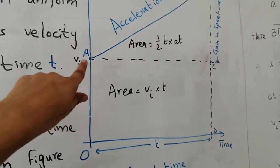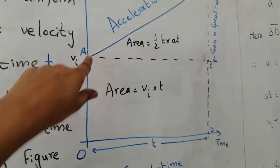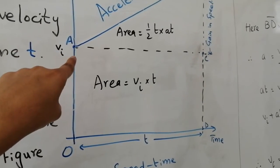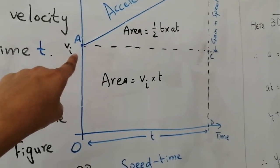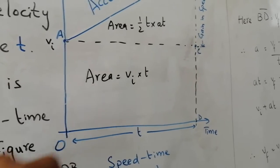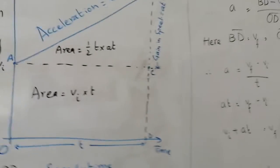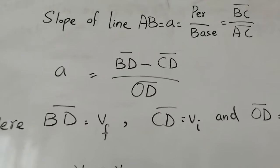When we need the CD value, we can see that the velocity at the starting point was the initial velocity. It means from this point to this point, CD value is vi. So here BD value is vf and CD value is vi, and OD is time t.